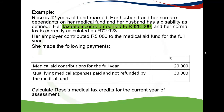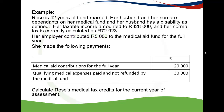Her taxable income amounts to 328,000 Rand and her normal tax is correctly calculated as 72,923 Rand — so the normal tax calculation has already been done for us. Her employer contributed 5,000 Rand to the medical aid fund for the full year. She also made her own medical aid contributions plus qualifying medical expenses paid and not refunded by the medical aid. We are asked to calculate her medical tax credits for the current year of assessment.